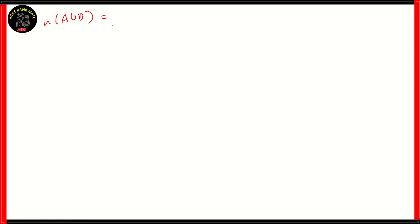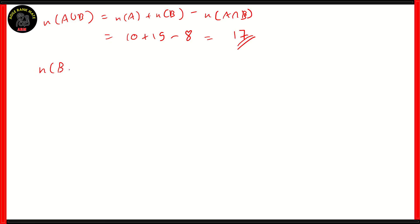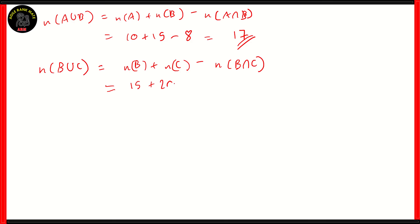Now let's find some other quantities. N(A∪B) equals N(A) plus N(B) minus N(A∩B), which is 10 plus 15 minus 8 — that gives you 17. Similarly, N(B∪C) equals N(B) plus N(C) minus N(B∩C), which is 15 plus 20 minus 9 — so 35 minus 9, that gives you 26.